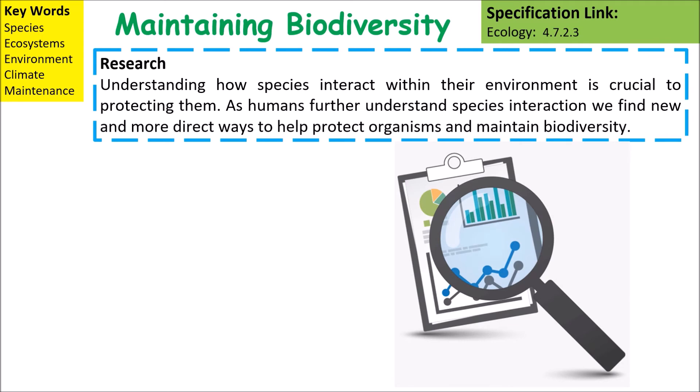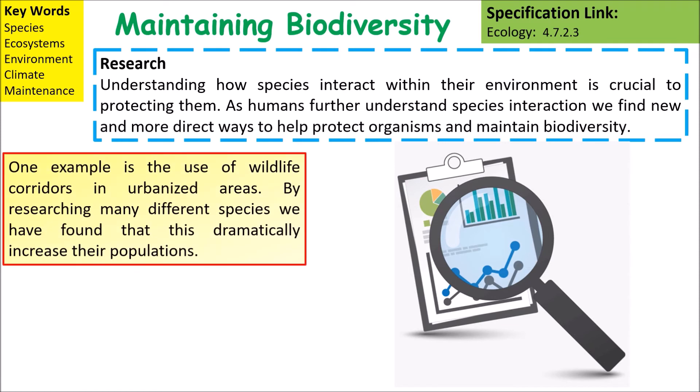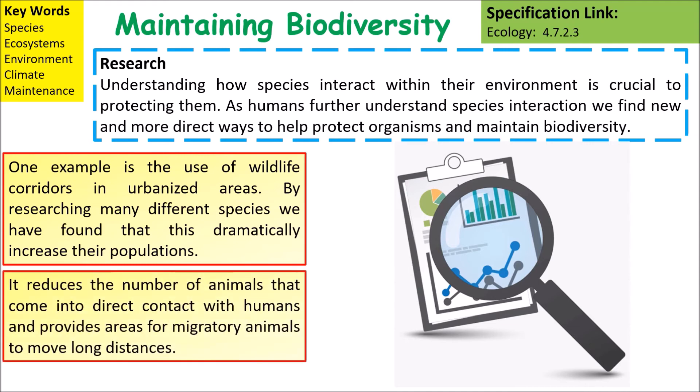Understanding how species interact with their environment is crucial to protecting them. As humans further understand species interactions, we find new and more direct ways to help protect organisms and maintain biodiversity. One example is the use of wildlife corridors in urbanized areas. Research has shown this dramatically increases animal populations, reduces the number of animals coming into direct contact with humans, and provides areas for migratory animals to move long distances.